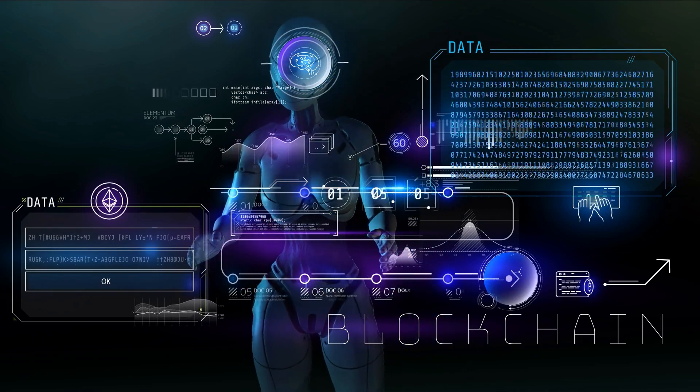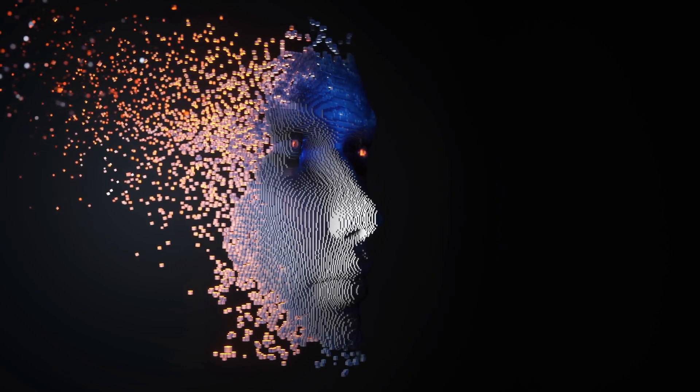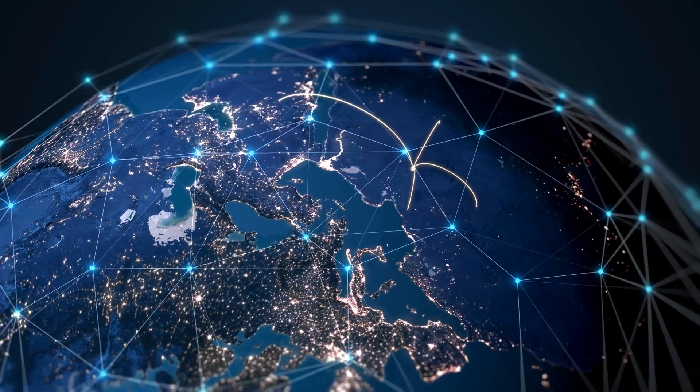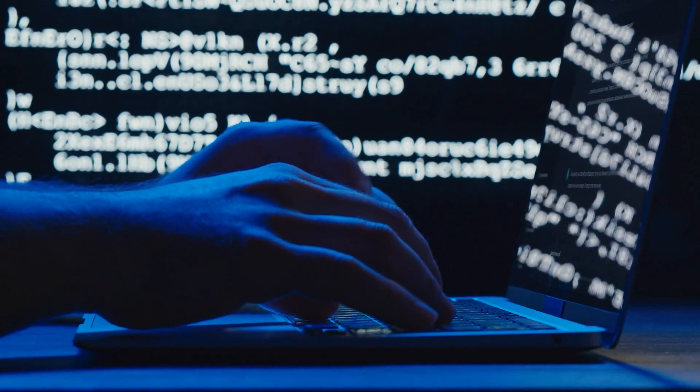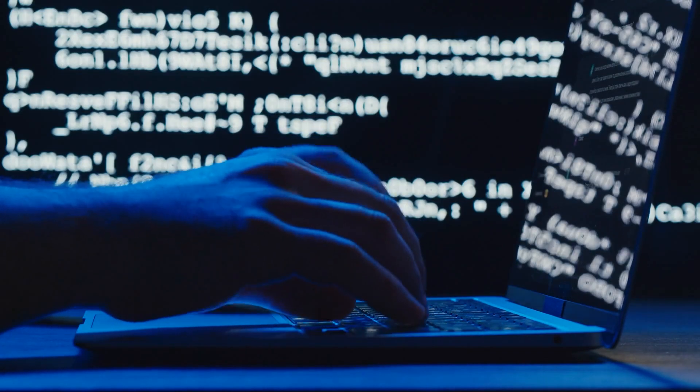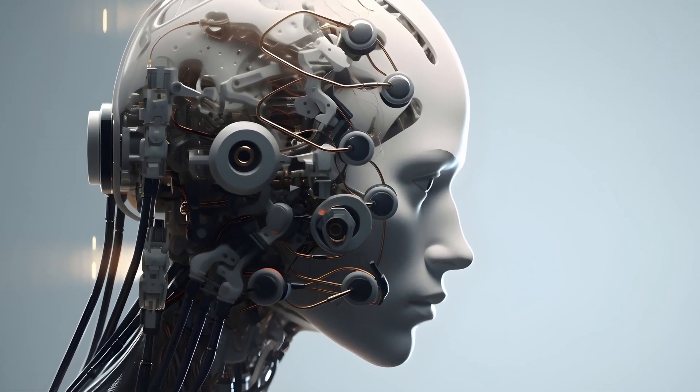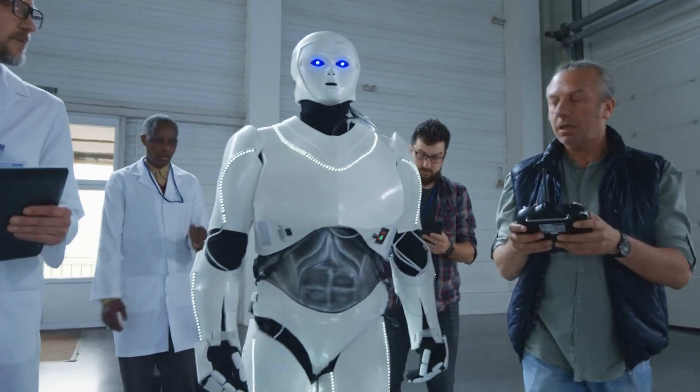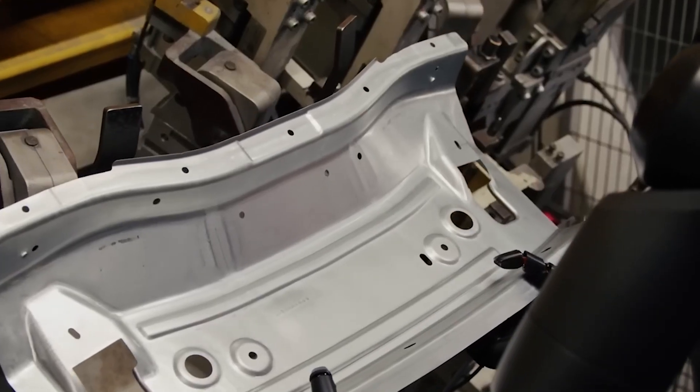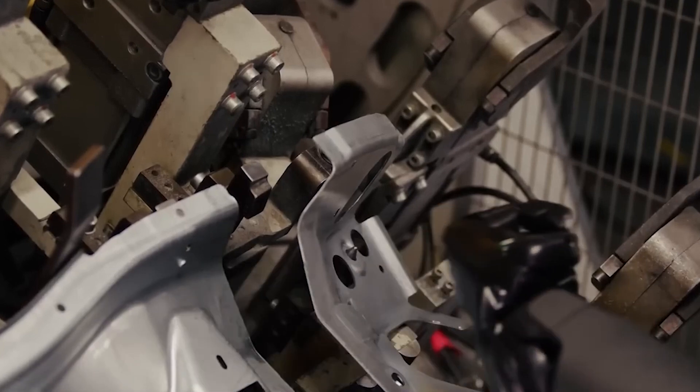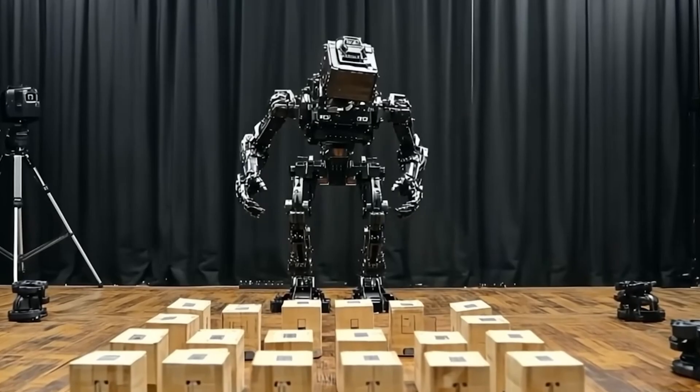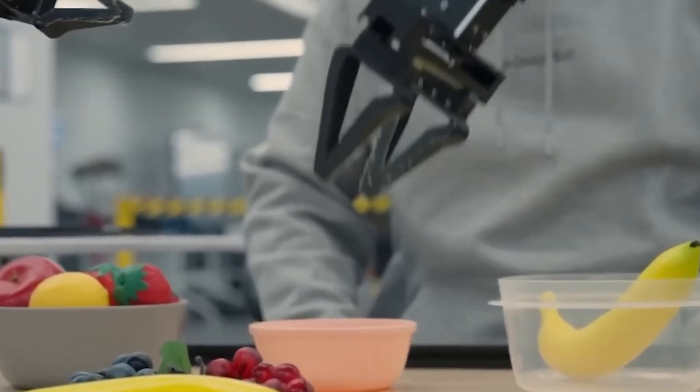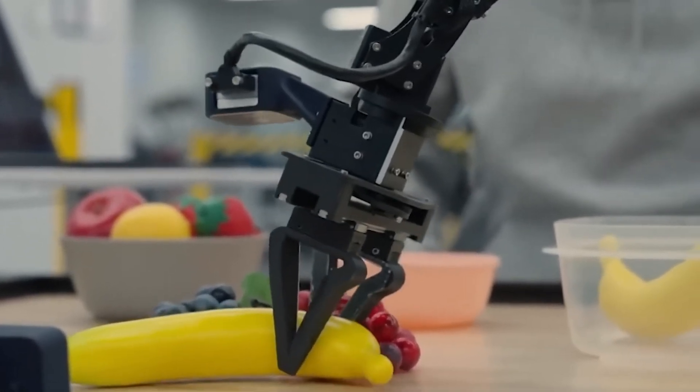But here's what keeps me skeptical. We've heard these reassurances before with other AI technologies, and yet problems still emerge. When robots have physical agency in the world, the stakes become much higher. And with OpenAI, Meta, and Amazon racing to catch up, I wonder if safety will remain the priority across the board. Competition has a way of pushing boundaries, sometimes in directions we later regret. There's something unnerving about machines that can interpret our casual commands and act on them in the physical world. What happens when instructions are ambiguous? What about malicious users? These are questions that will need robust answers as this technology develops.